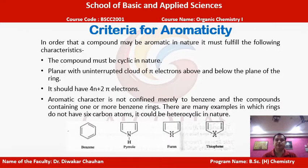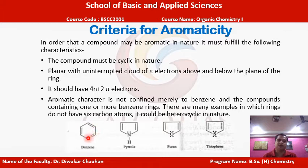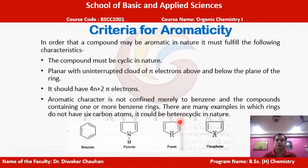The first important criterion for aromaticity is that the compound must be cyclic in nature. In benzene, all corners represent carbon atoms joined to form a cyclic ring. In pyrrole, four corners represent carbon atoms while nitrogen is also involved in forming the five-membered ring. Similarly, furan forms a five-membered ring including an oxygen atom, and thiophene also has a five-membered ring including sulfur.